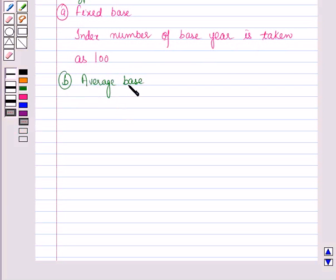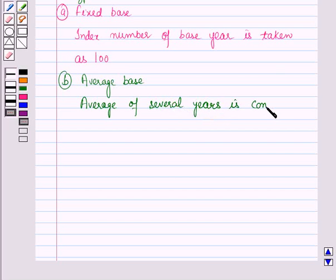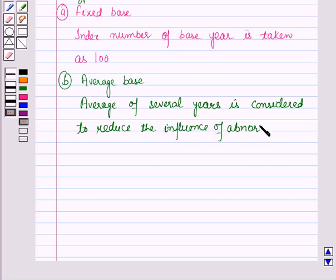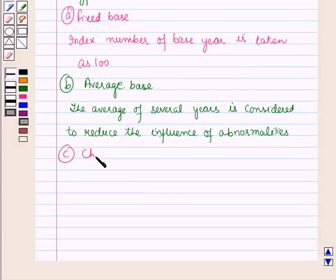Second is the average base. When it is difficult to select a fixed base, then the average of several years is considered to reduce the influence of abnormalities. Next is the chain base.